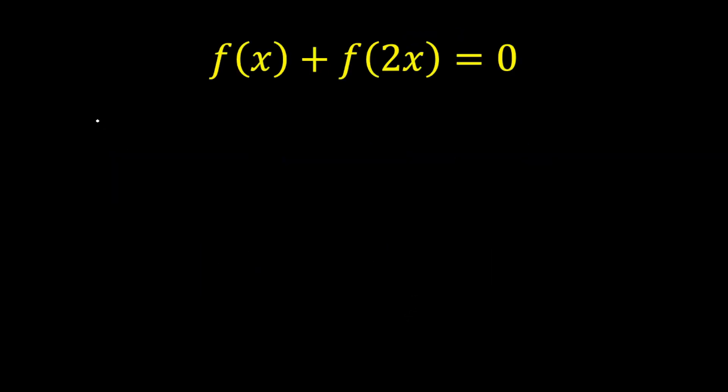Here, I can write this as f(2x) = -f(x). Let's do one thing here: let's replace x by x/2, because this functional equation is valid for all x belongs to R.